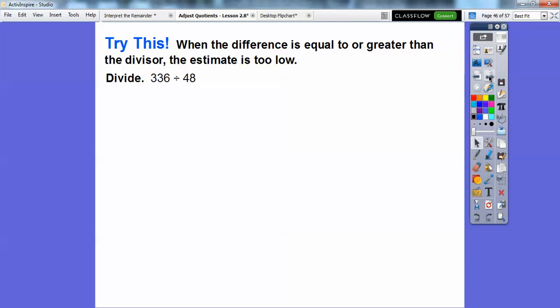Let's try this. When the difference is equal to or greater than the divisor, our estimate is too low. Let's divide 336 divided by 48. There's our compatible number. 48 is 50, and we'll do 300. 5 goes into 30 six times, and these zeros cancel each other. So the answer is 6. We're going to divide it in the ones spot. Notice this 6 is in the ones spot.